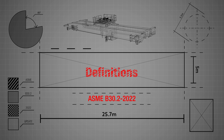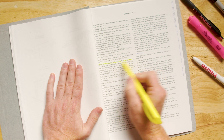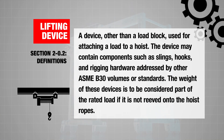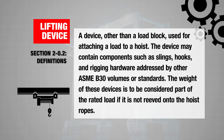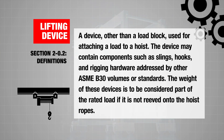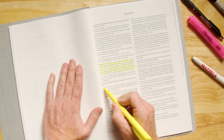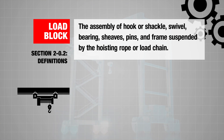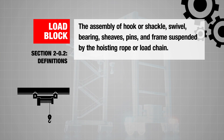ASME B32 2022 has revised the definition for lifting devices. The new definition reads: a device other than a load block used for attaching a load to a hoist. The device may contain components such as slings, hooks, and rigging hardware addressed by other ASME B30 volumes or standards. The weight of these devices is to be considered part of the rated load if it is not reaved onto the hoist ropes. ASME B32 2022 has also revised the definition for load blocks, simplifying it to: the assembly of a hook or shackle, swivel, bearing, sheaves, pins, and frame suspended by the hoisting rope or load chain.